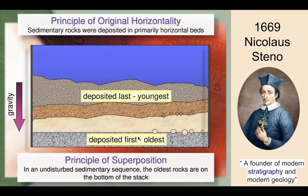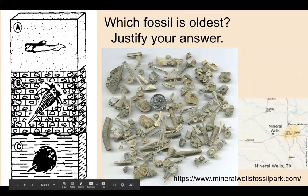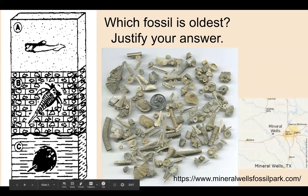The youngest rocks are going to be at the top. So if you remember back to that diagram showing fossils A, B, and C, which one would be the oldest fossil? Hopefully you said letter C, because according to the principle of superposition, the oldest fossils or rocks are going to be at the bottom, and the youngest will be at the top.